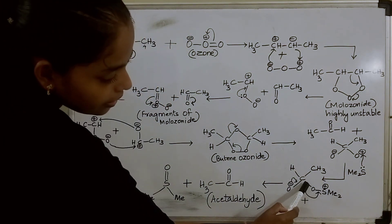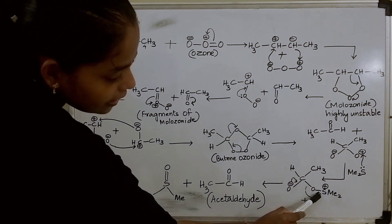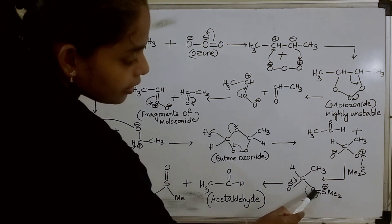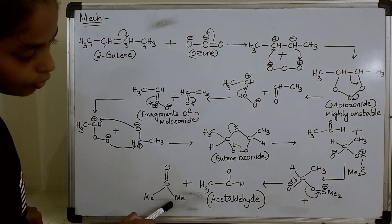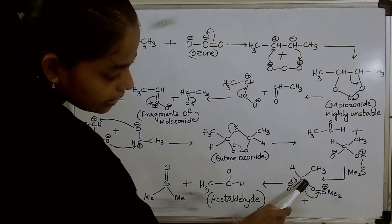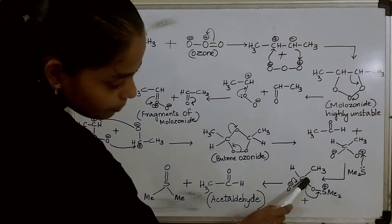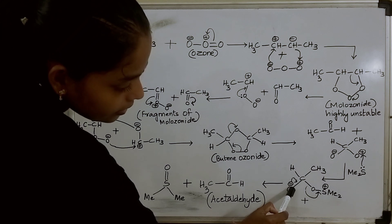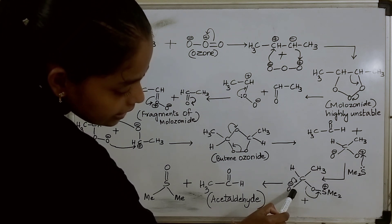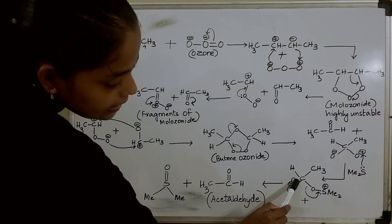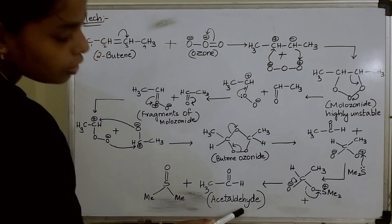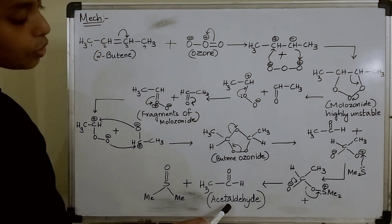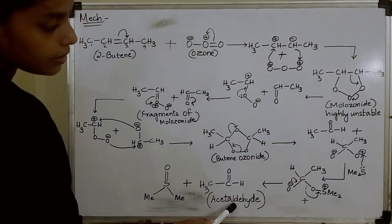Because of which, the bond present between the carbon and oxygen is shifted and the group is eliminated in the form of dimethyl sulphoxide. Here the carbon will get a positive charge. Then the negatively charged oxygen will donate its electrons and gives acetaldehyde. So here 2 moles of acetaldehyde is obtained.